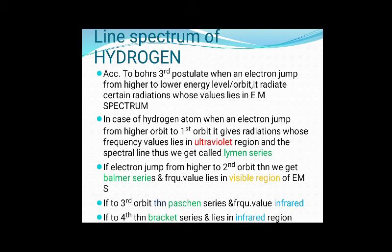The electromagnetic spectrum includes radio, MRI, visible, ultraviolet, X-rays, and gamma rays. In the case of the hydrogen atom, when an electron jumps from a higher orbit to the first orbit, it gives out radiation whose frequency values lie in the ultraviolet region, and the spectral line thus obtained is called the Lyman series.